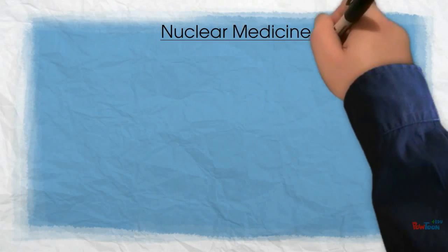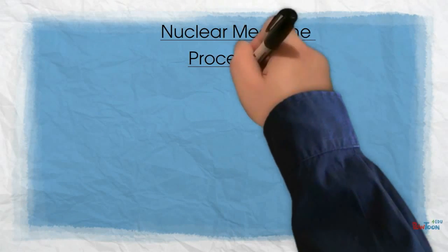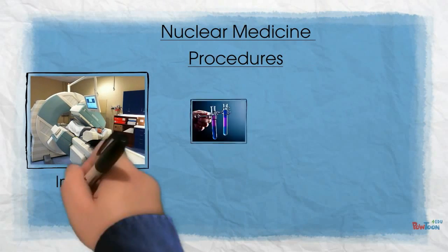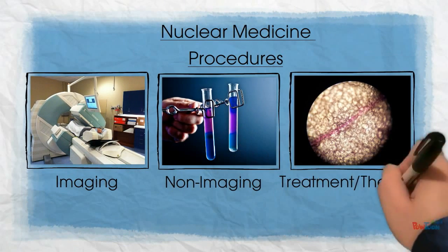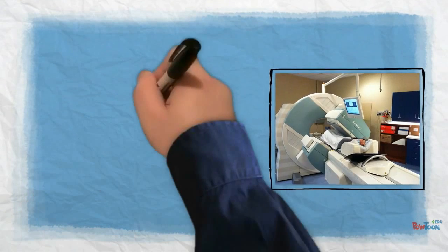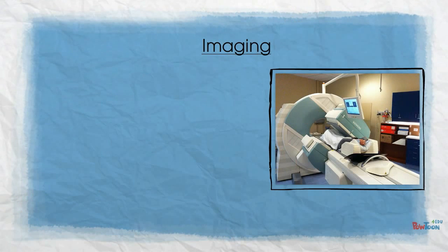Let's break down the three main categories in nuclear medicine: imaging, non-imaging tests, and treatment. Imaging is a large part of nuclear medicine.